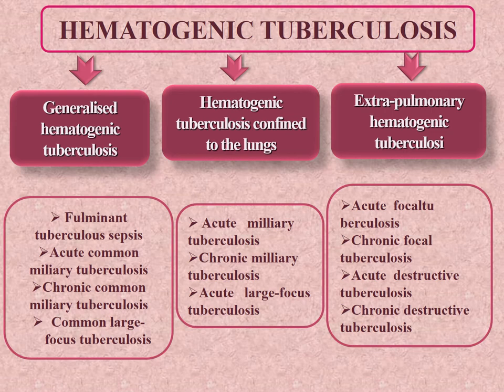Hematogenic tuberculosis confined to the lungs: if the infection originating from Simon foci invades a branch of a pulmonary artery, the process may be confined to the lungs initially. Other organs are not involved, or only a few foci may occur. Usually the lesions are more numerous and appear in both lungs. According to the clinical course, the process may be acute or chronic, and according to the size of the involved area, foci may be of miliary or large-focus type.